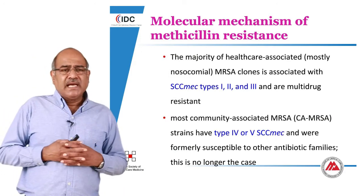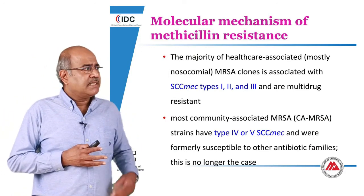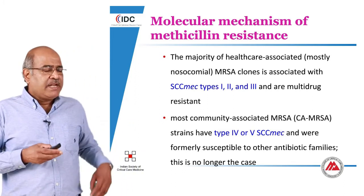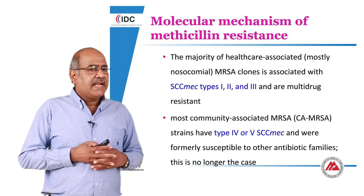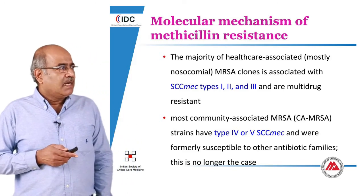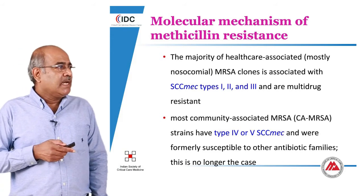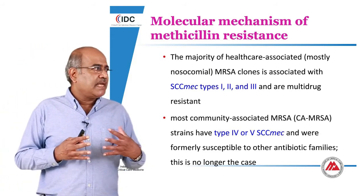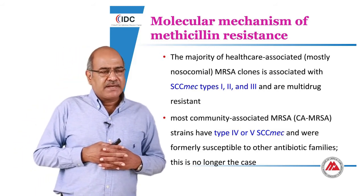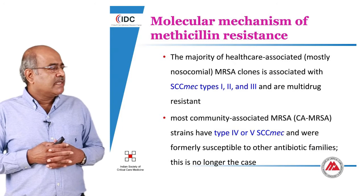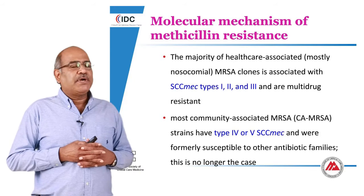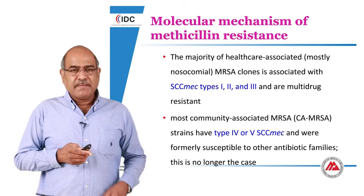This gives the organism its resistance. When you dissect it further, you realize there is a Staphylococcal Chromosomal Cassette MEC, or SCCmec, of which there are three types in the nosocomial or healthcare associated MRSA, and type 4 and type 5 SCCmec are seen predominantly in the community acquired MRSA.